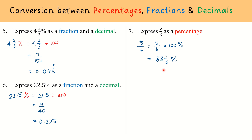While it is easy to watch this video and assume my answer is right, I really urge you to actually press 5 over 6 times 100 into your calculator to verify that the answer is 83 and 1 over 3 and correct. We should never be pressing the percentage sign in our calculator at all.